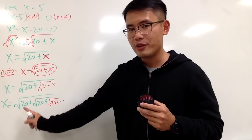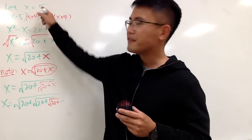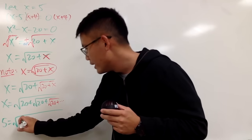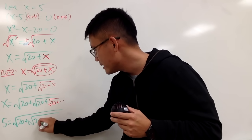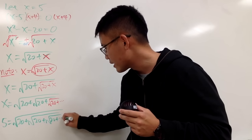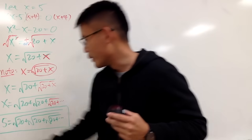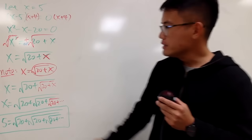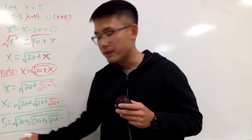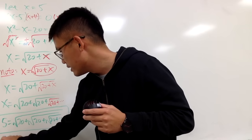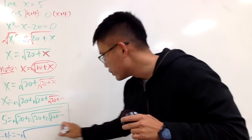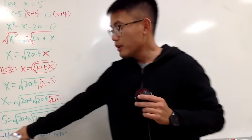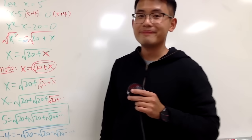Don't forget x was 5. So, congratulations — we just showed that 5 equals the square root of 20 plus the square root of 20 plus the square root of 20 plus dot dot dot. This is the infinite nested square root form of the number 5. If you kept the negative square root earlier, you would get negative 4 equals negative square root of 20 minus the square root of 20 minus the square root of 20 minus dot dot dot.